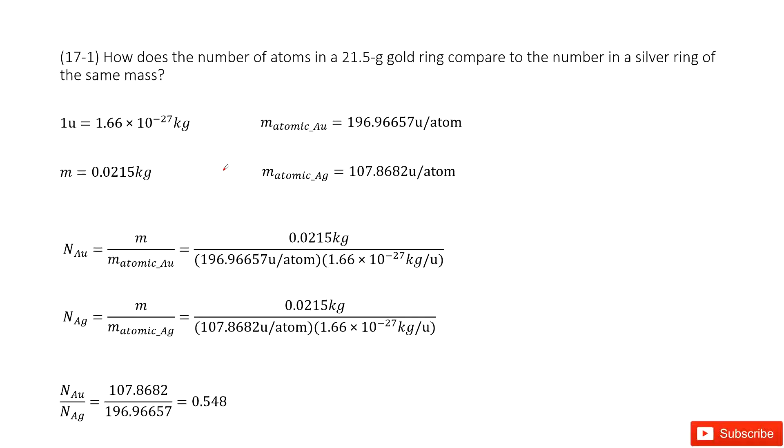So we can see for this question we talk about atomic gold and atomic silver. The given quantities are the mass for the gold ring and silver ring, and we need to compare the number of atoms in this gold ring and silver ring. Now let's see how we can do that.